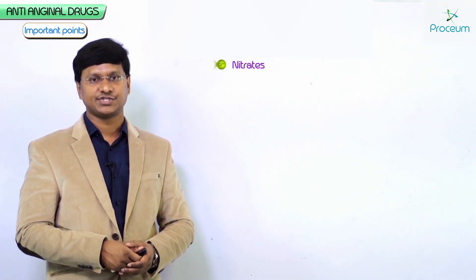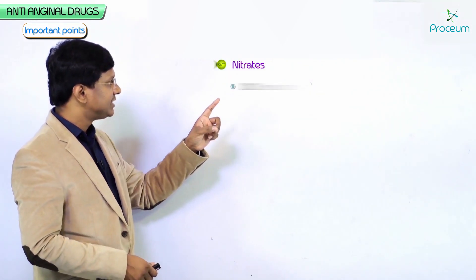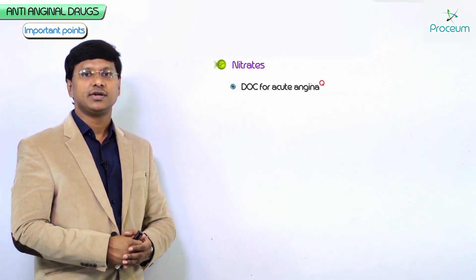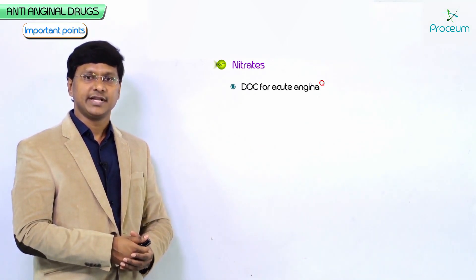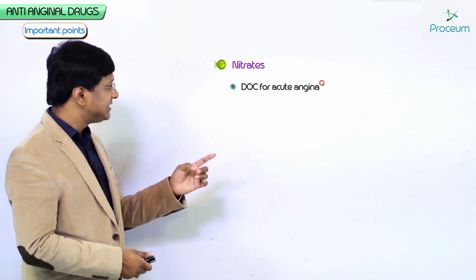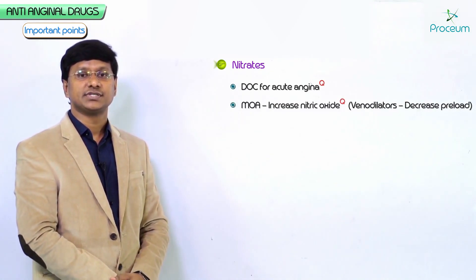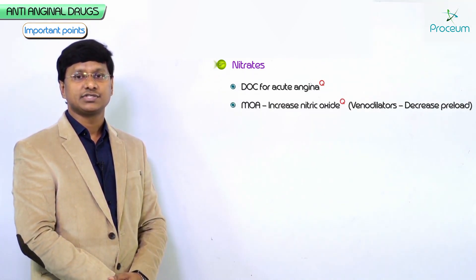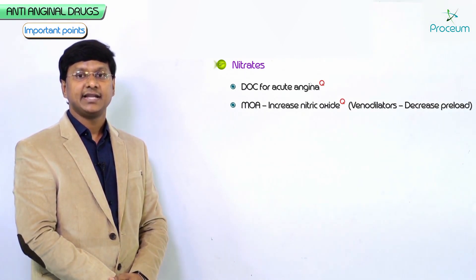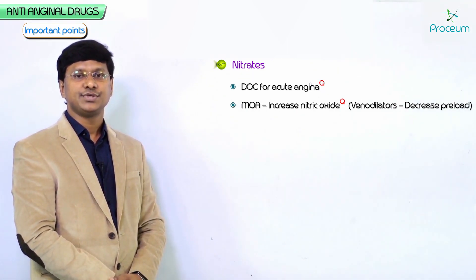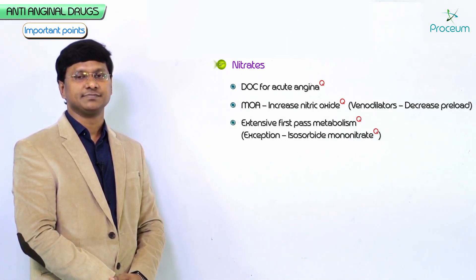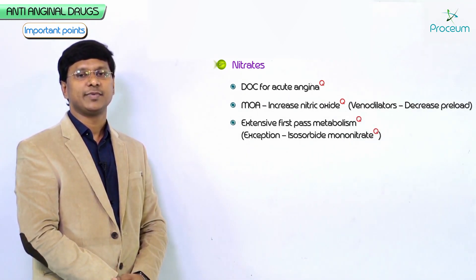Regarding important MCQ points about nitrates: nitrates are the initial drug of choice for angina pain. For acute angina, we give sublingual nitrates. The mechanism of action involves increasing nitric oxide release. Nitrates are mainly venodilators and thereby decrease the preload. Another important MCQ point is that they have extensive first-pass metabolism, except isosorbide mononitrate.